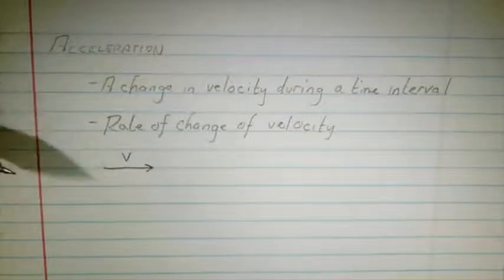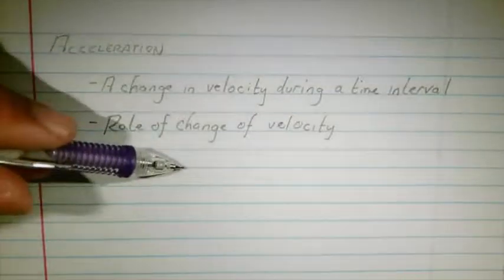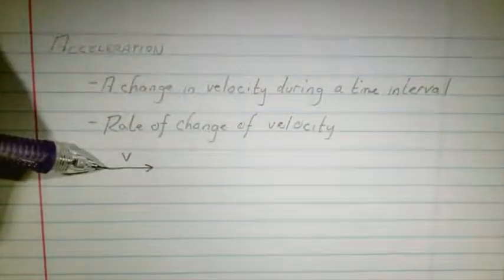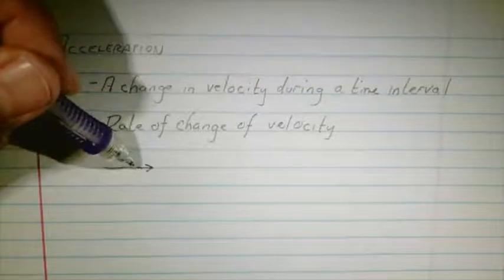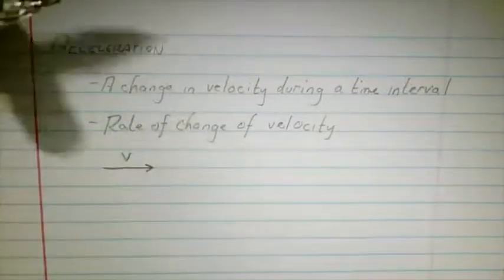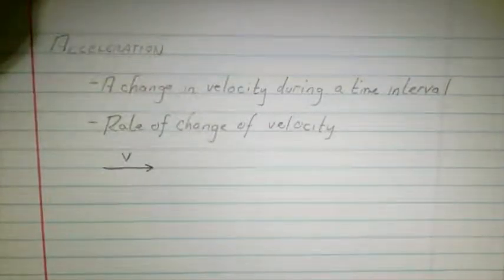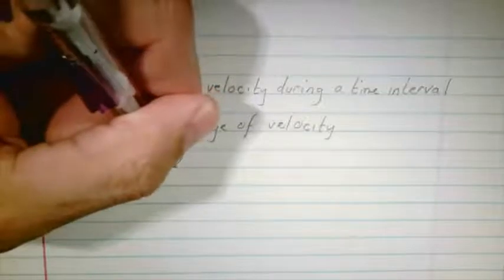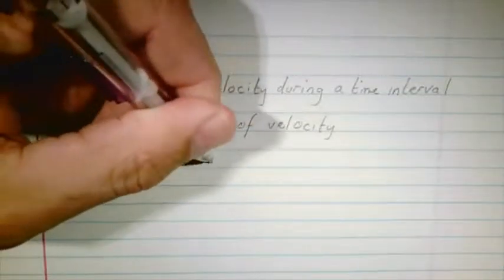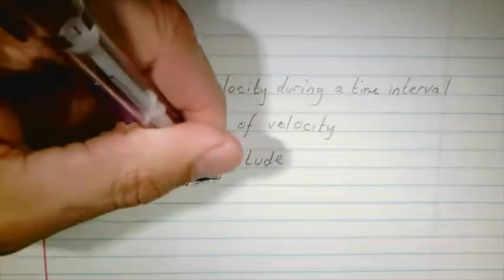If we look at velocity as a vector, there are a couple things I can do to change a velocity. I could make the vector bigger — give it a bigger magnitude — I could make it smaller, give it a different magnitude, or I could turn it. A vector of any sort has a magnitude and a direction, so I can change that vector by changing the magnitude or by changing the direction.